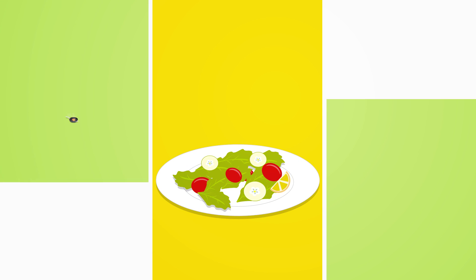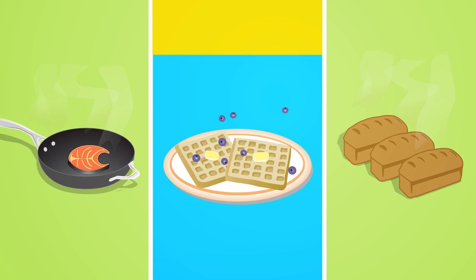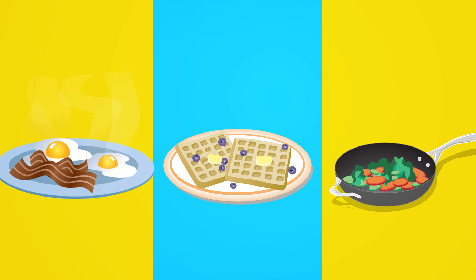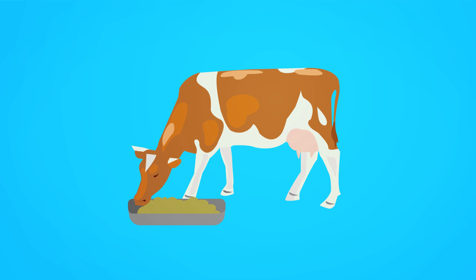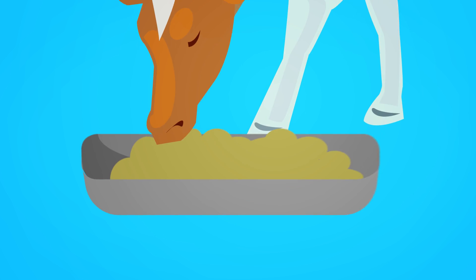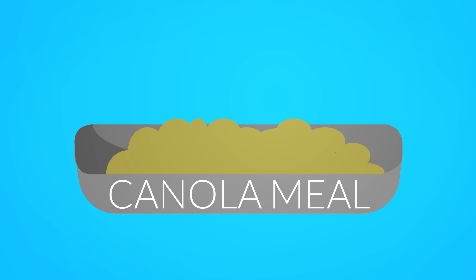Canola oil has exploded in popularity to become one of the most widely used cooking oils in the world. It can be used as a great substitute for almost any other oil. It also provides livestock with great high protein feed. Canola meal is a byproduct from crushing canola seeds to make canola oil.